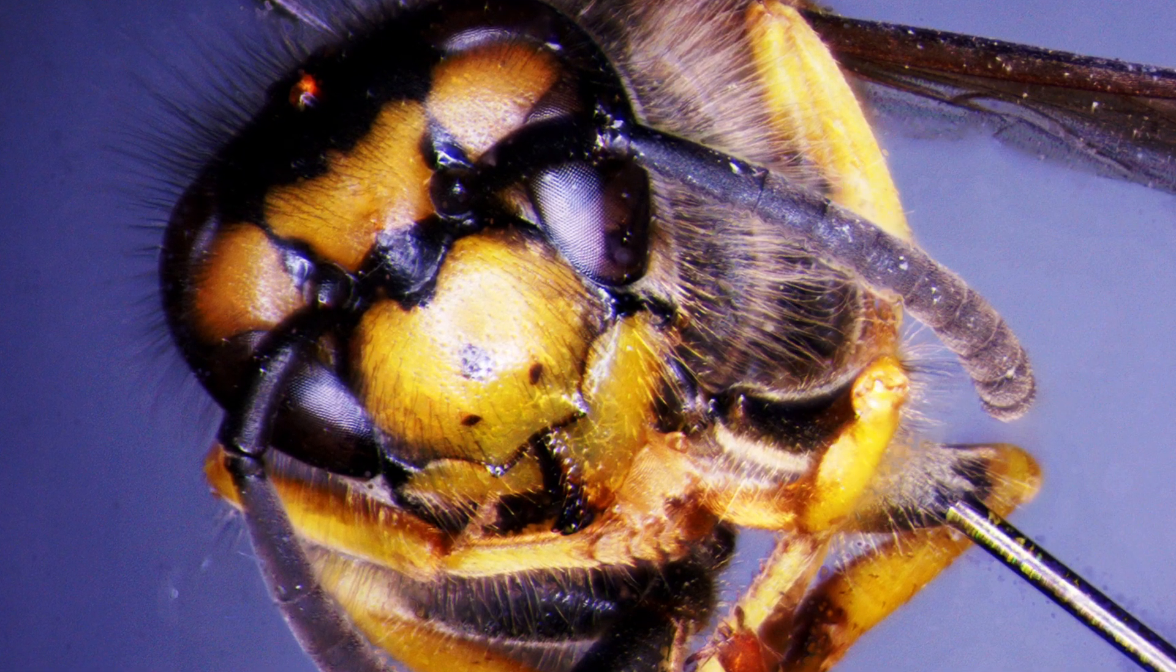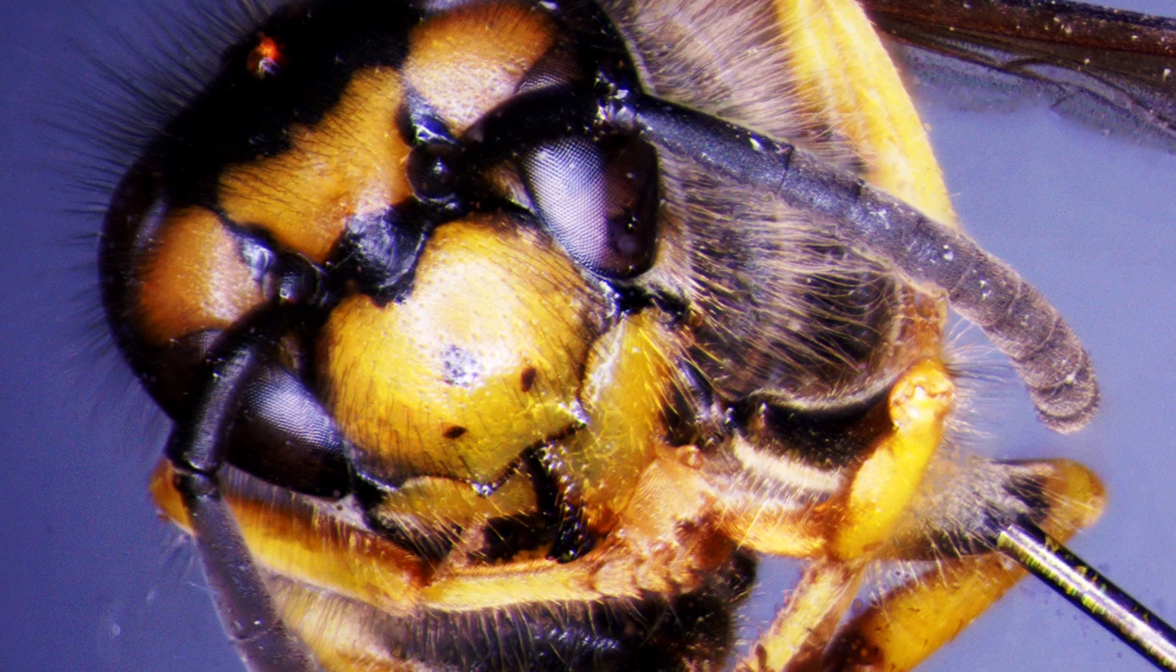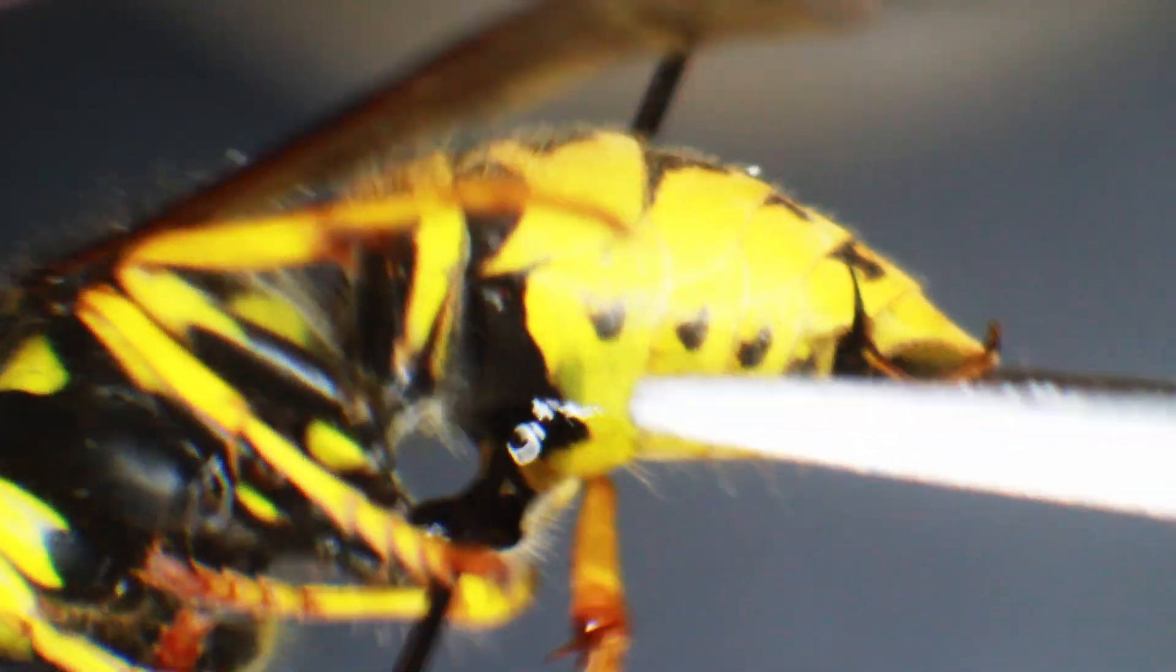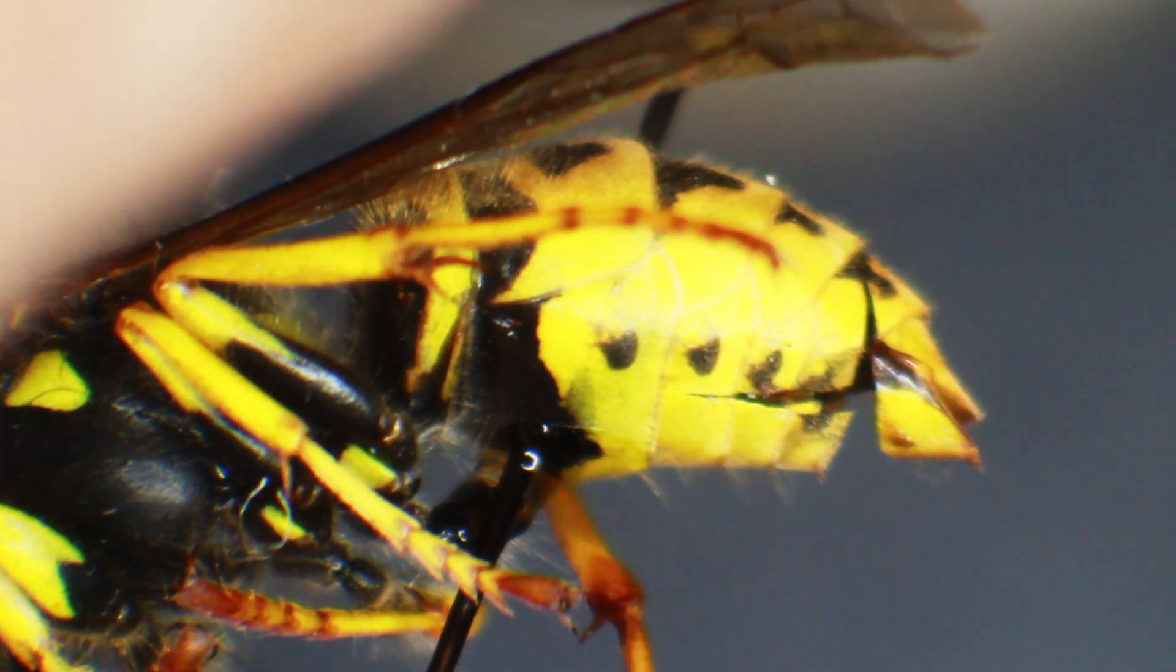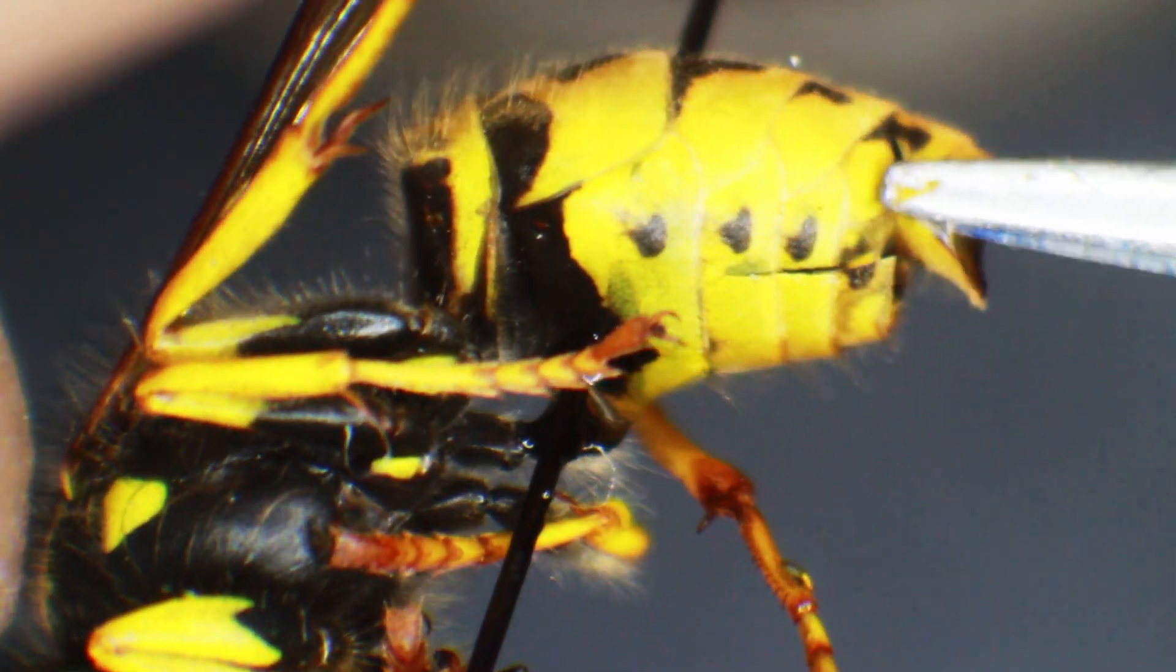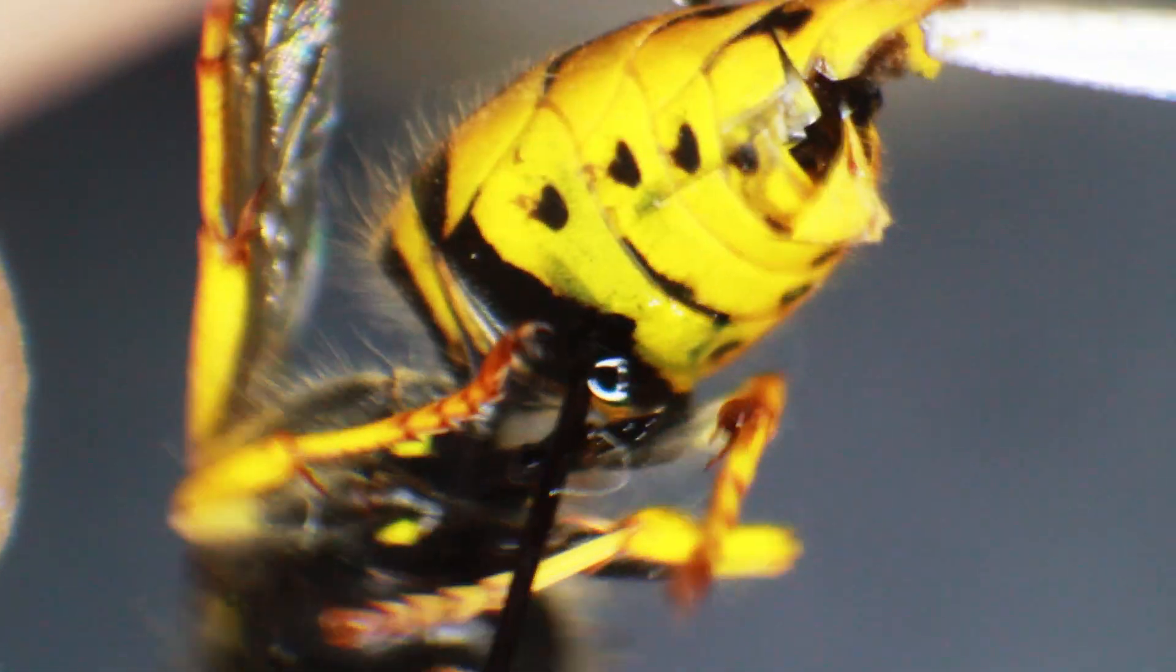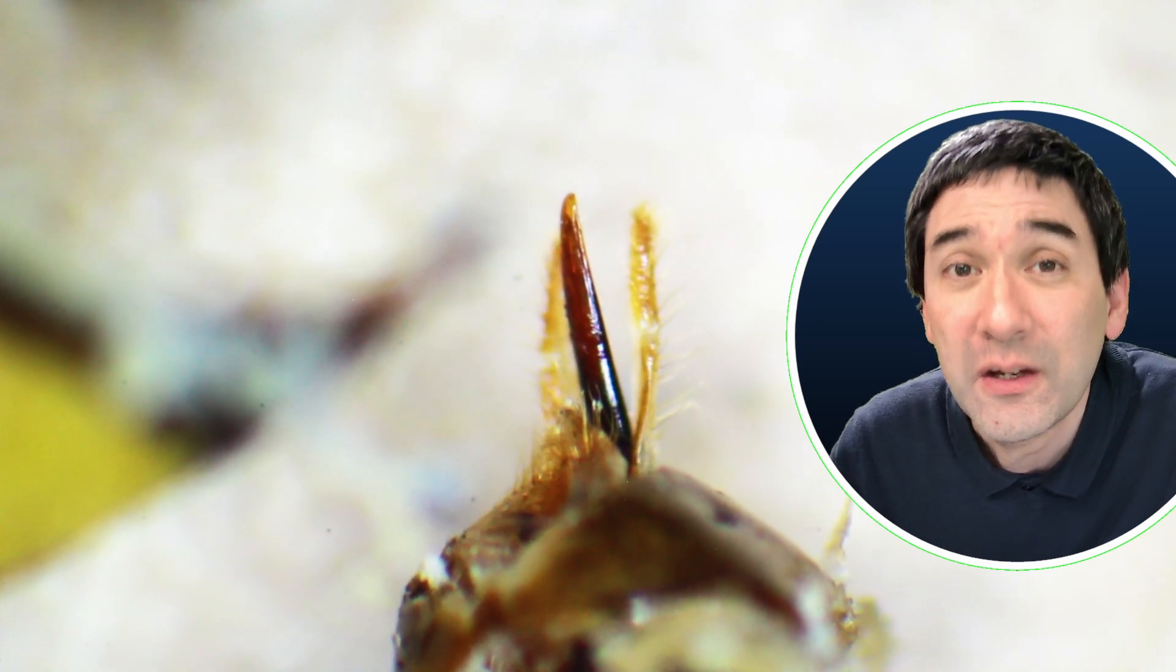What I did is I found a dead wasp on my balcony, so no animals were harmed in the making of this video. I used my dissecting tools to cut it apart, and under my stereo microscope I was able to extract the stinger. This was actually not so easy and it was quite small, but if you put it under the microscope, you're able to see that the stinger is very smooth.